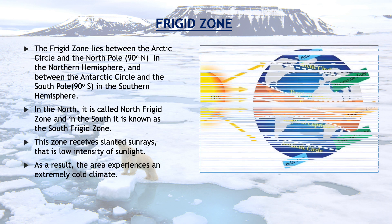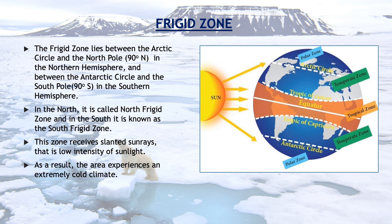Let's talk about the frigid zone. The frigid zone lies between the Arctic Circle and the North Pole, 90 degree north, in the northern hemisphere, and between the Antarctic Circle and the South Pole, 90 degree south, in the southern hemisphere. In the north it is called the north frigid zone and in the south it is known as the south frigid zone. This zone receives slanted sun rays, that is, low intensity of sunlight. As a result, the area experiences an extremely cold climate.